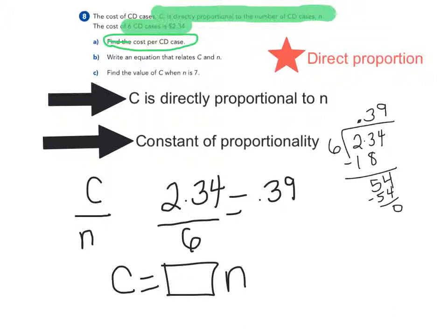Because I know that it's $0.39 for 1, I'm going to take that $0.39 and put it in here. That's where the constant of proportionality goes. So my equation is going to be C equals $0.39 times N.